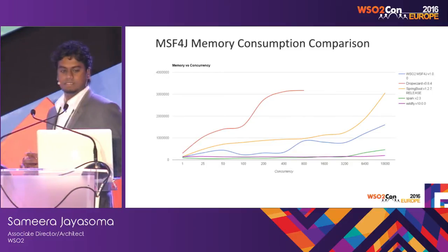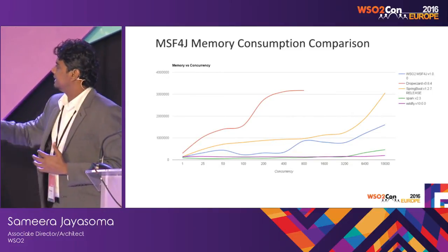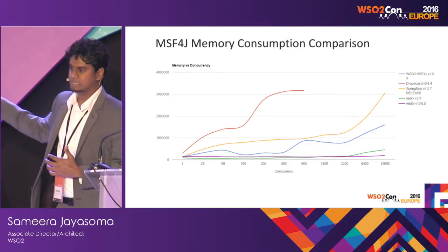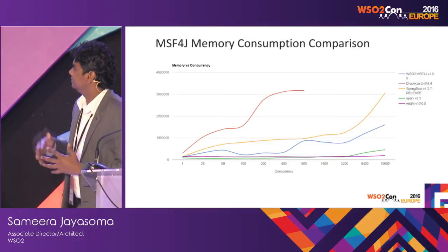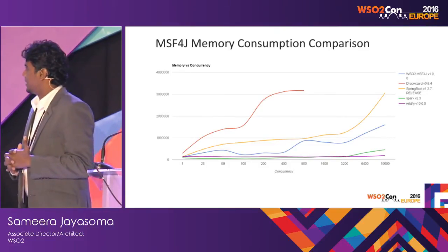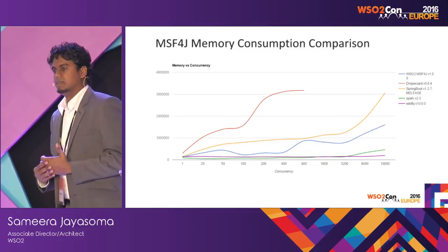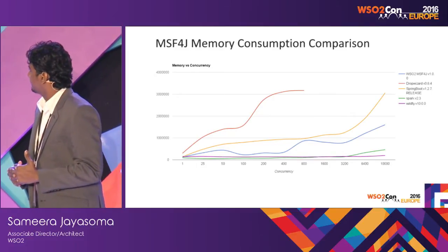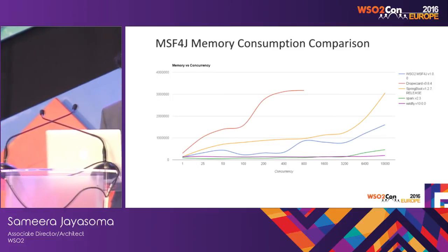The next diagram basically shows how we monitored memory growth as we kept increasing concurrency, and how these individual different frameworks behave. You can refer to this diagram — all these diagrams are available in the documentation in the GitHub project. You can see the differences.